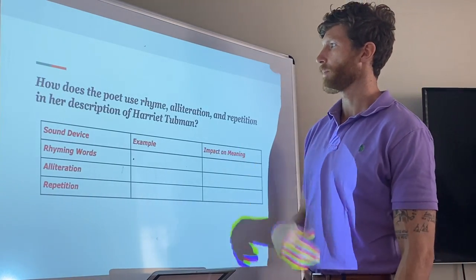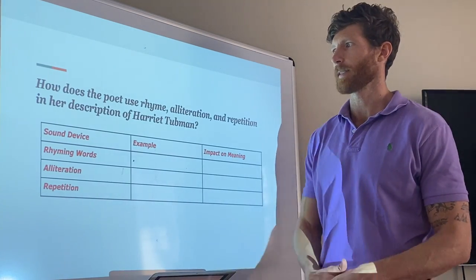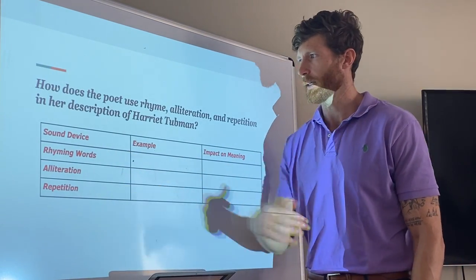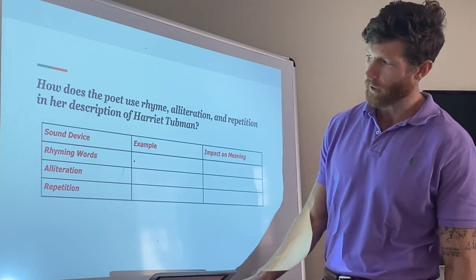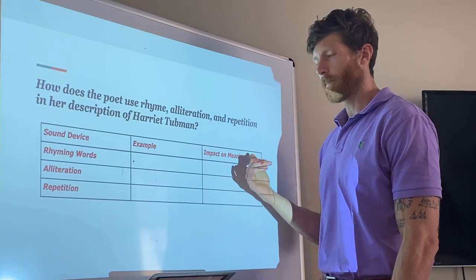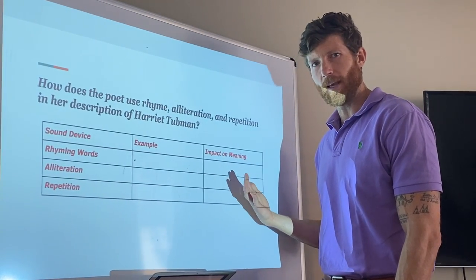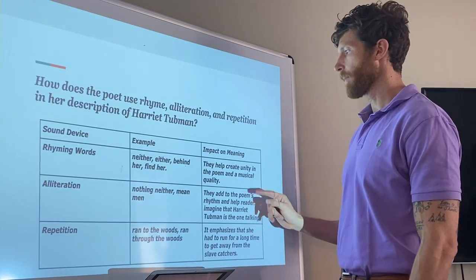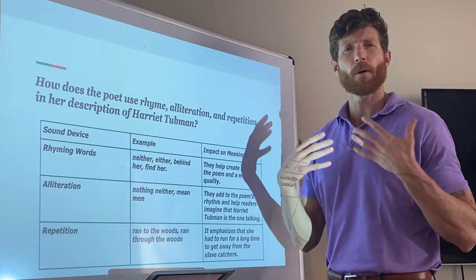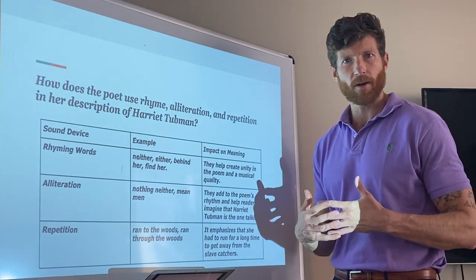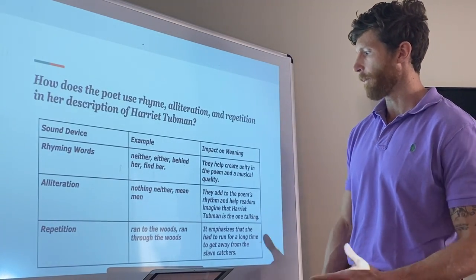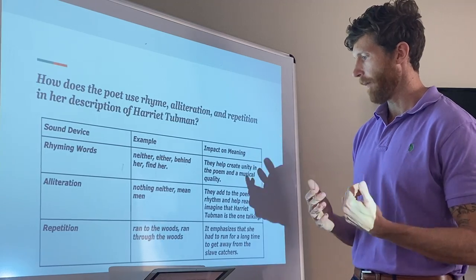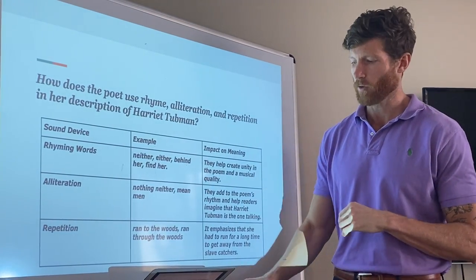Now I'm going to fill out the graphic organizer. Rhyming words: neither, either, behind her, find her. Impact on meaning: they help create unity in the poem and give the poem a musical quality. Alliteration: nothing neither, and mean men. Impact: they add to the poem's rhythm and help readers imagine that Harriet Tubman is the one talking. Repetition: 'ran to the woods, ran through the woods.' Impact: it emphasizes that she had to run for a long time to get away from the slave catchers.